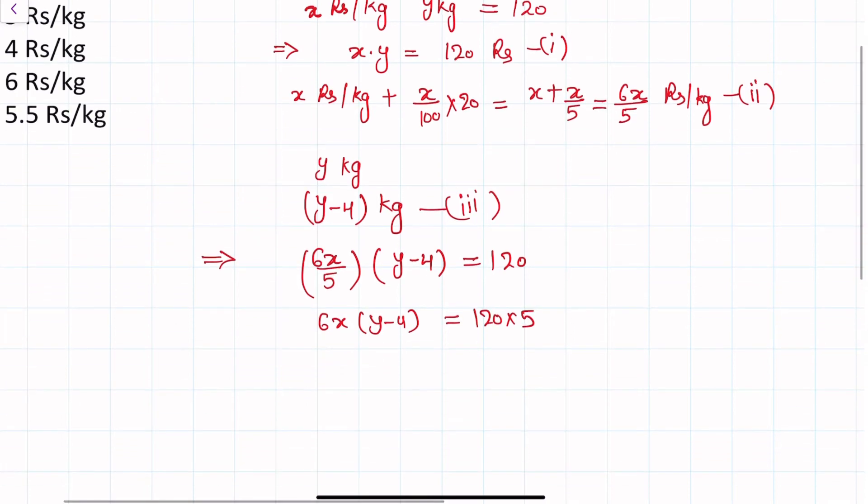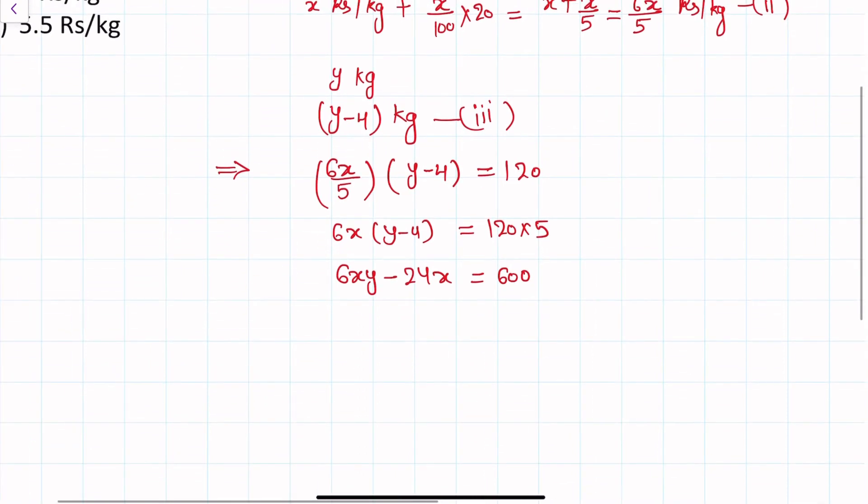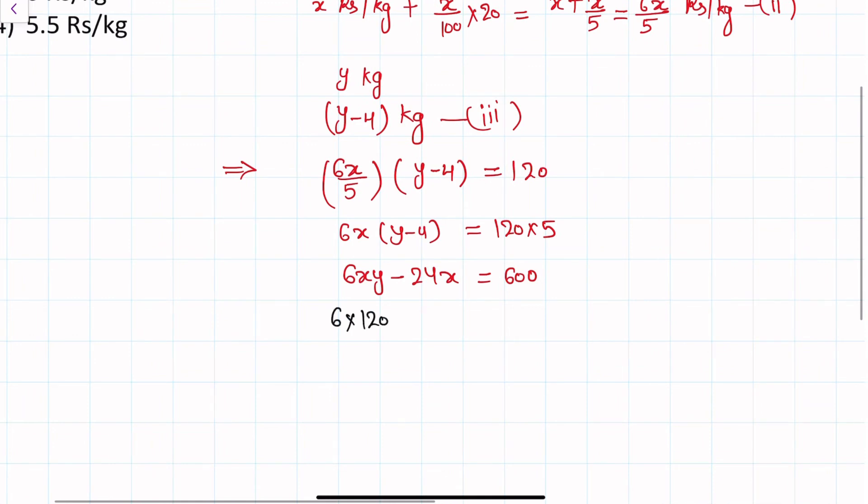120 into 5, we can say 6XY minus 24X which is equal to 600. From equation 1, X into Y is 120 rupees, so 6 into 120 minus 24 into X which is equal to 600. 24 into X which is equal to 6 into 120 minus 600, which means 24X is equal to 720 minus 600 which is equals to 120.